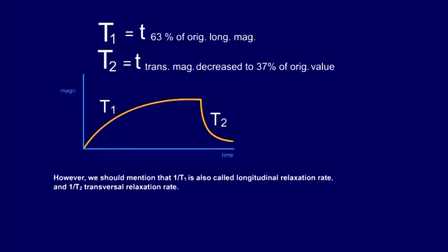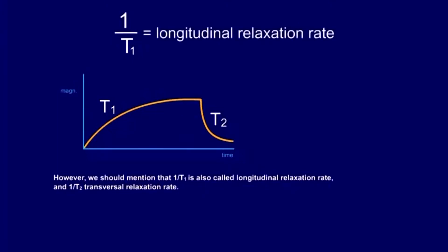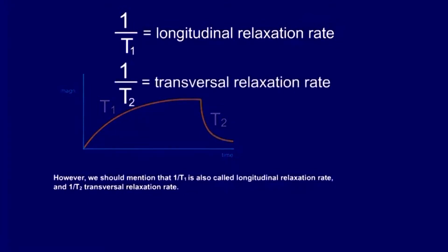However, we should mention that 1 over T1 is also called the longitudinal relaxation rate, and 1 over T2 is the transversal relaxation rate.